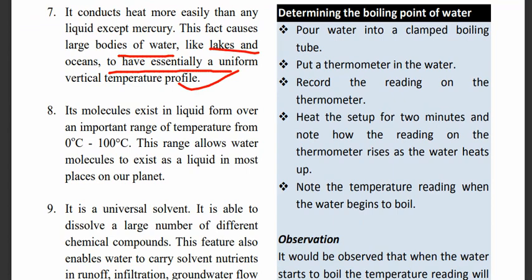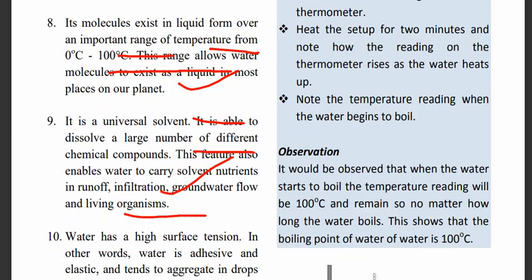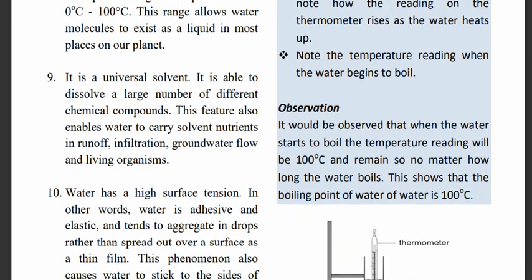This fact causes large bodies of water like lakes and oceans to have essentially a uniform vertical temperature profile. Water molecules exist in liquid form over an important range of temperature — from 0 degrees Celsius to 100 degrees Celsius. This range allows water molecules to exist as a liquid in most places on our planet. Water is also a universal solvent, able to dissolve almost most substances.